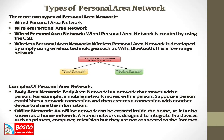There are two types of personal area network: first, wired personal area network; second, wireless personal area network. The wired personal area network is created by using USB. Wireless technologies such as Wi-Fi and Bluetooth are used for wireless PAN, and it is a low-range network.